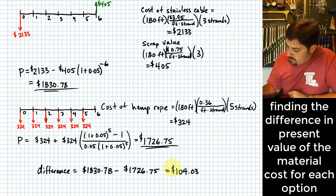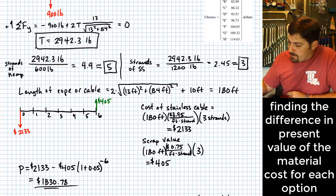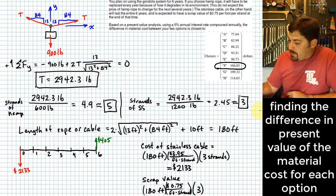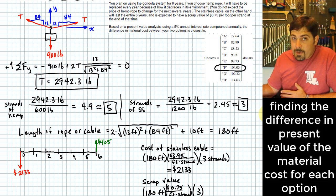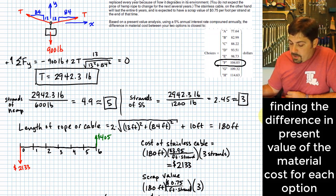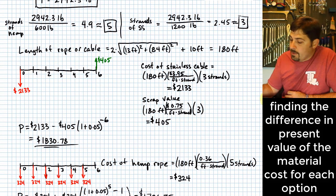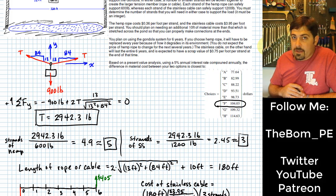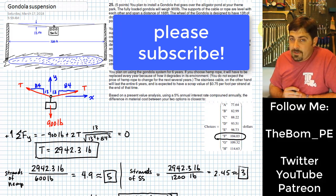The difference is $104.03. That looks like one of the answer choices. As a follow-up question of interest: which option is better? Whichever minimizes your cost — since these are both costs, the stainless steel is going to be more money. So based just on material cost, the hemp has a slight advantage. I hope this has been helpful. If it has, please subscribe to my channel, and I appreciate you watching.